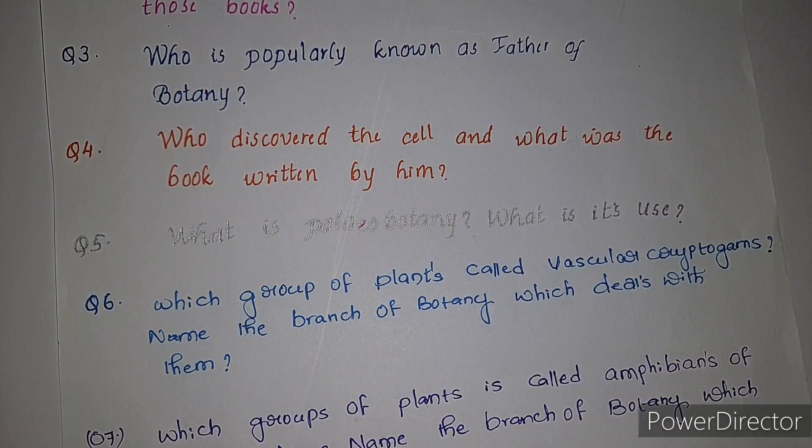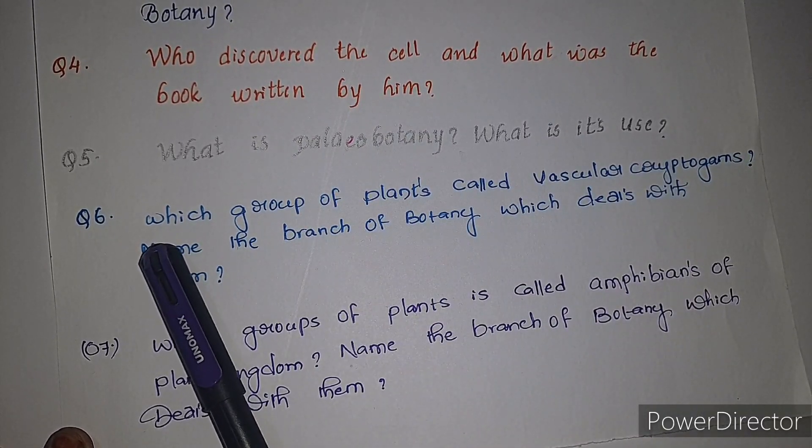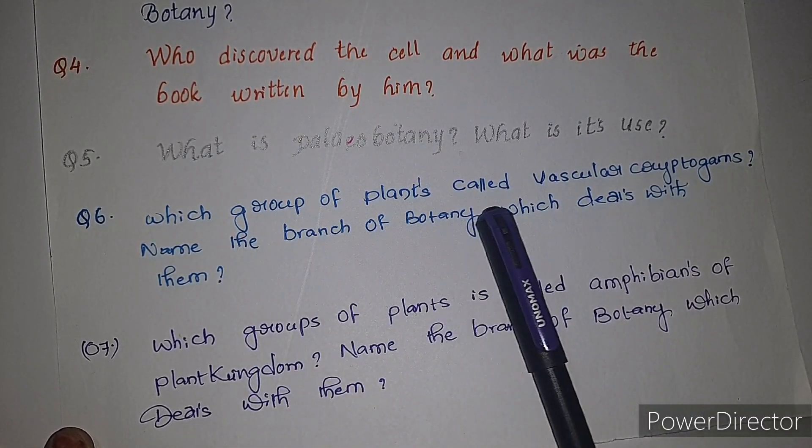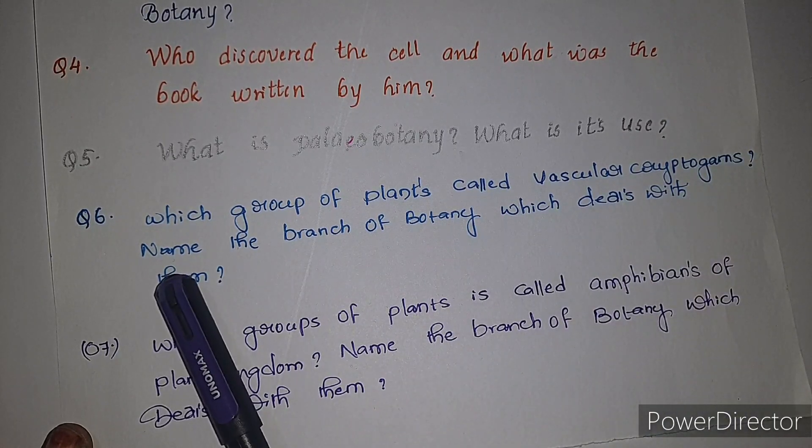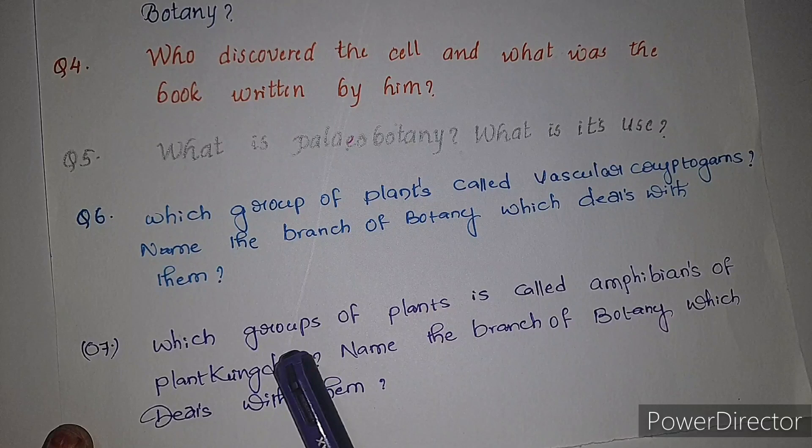What is paleobotany? What is its use? Sixth question: which group of plants called vascular cryptogams? Name the branch of botany which deals with them. Seventh question: which group of plants is called amphibians of plant kingdom? Name the branch of botany which deals with them.